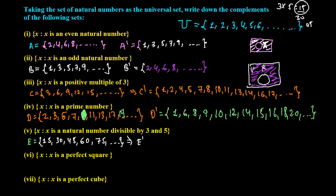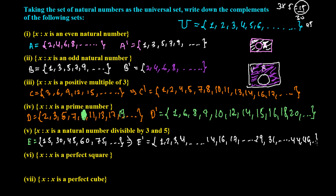So E complement will be all natural numbers except the multiples of 15. We write 1, 2, 3, 4 ... up to 14, then skip 15, write 16 through 29, skip 30, write 31 through 44, skip 45, write 46, and so on like this.